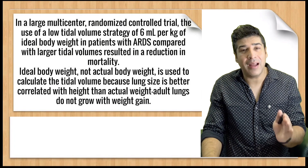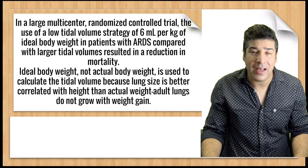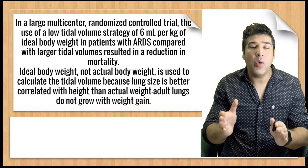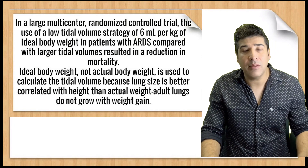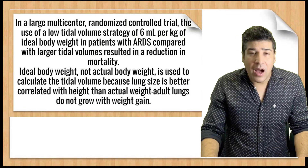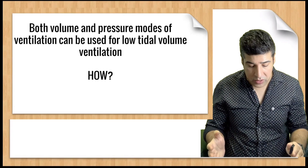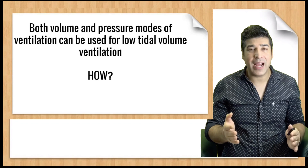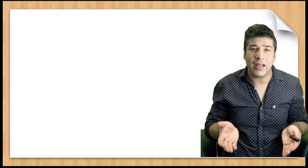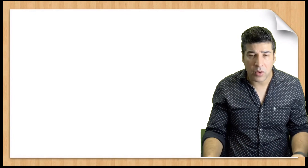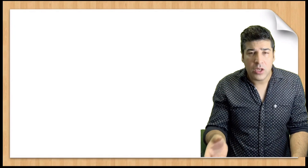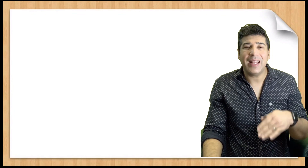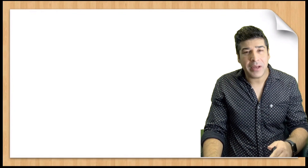It has to be 6 ml per kg ideal body weight. Studies have shown that mortality is less in patients receiving 6 ml per kg ideal body weight compared to those receiving more. In volume control ventilation, we simply set the lower tidal volume based on ideal body weight, which decreases volutrauma in mechanically ventilated patients.